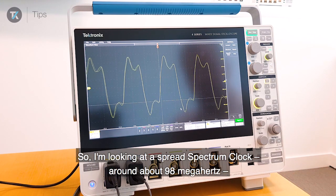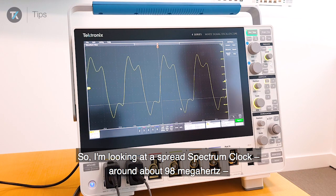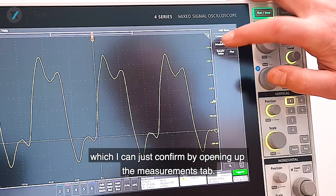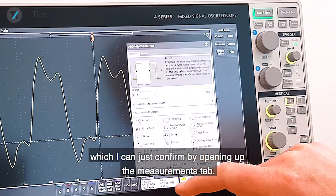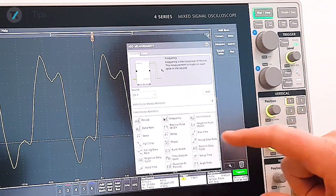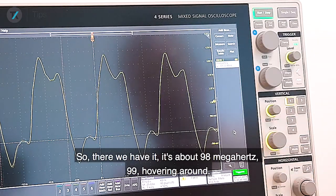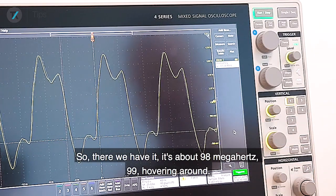I'm looking at a spread spectrum clock around 98 MHz, which I can confirm by opening up the measurement tab. There we have it, about 98 or 99 MHz.